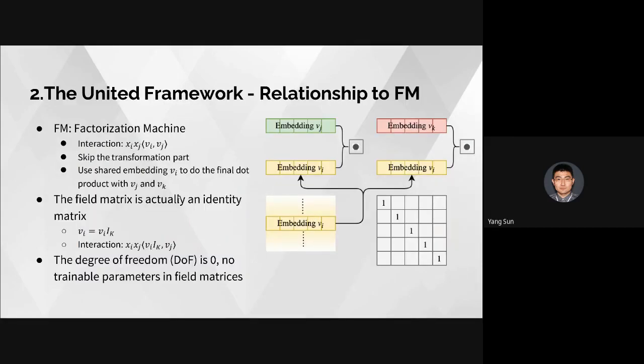FM-Square is very similar to the original FM. We use the three-step framework to explain FM better. In the original factorization machine, it skips the transformation step and uses the shared embedding vi to do the dot product with vj and vk. We can construct a matrix for the second transformation step, and it must be an identity matrix — meaning there are no trainable parameters. We define the degree of freedom as zero.